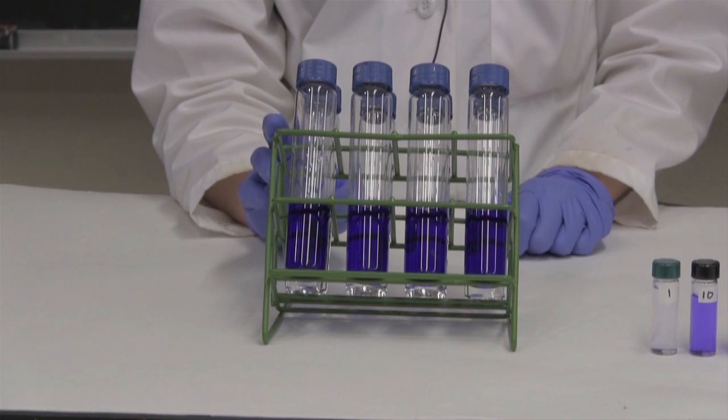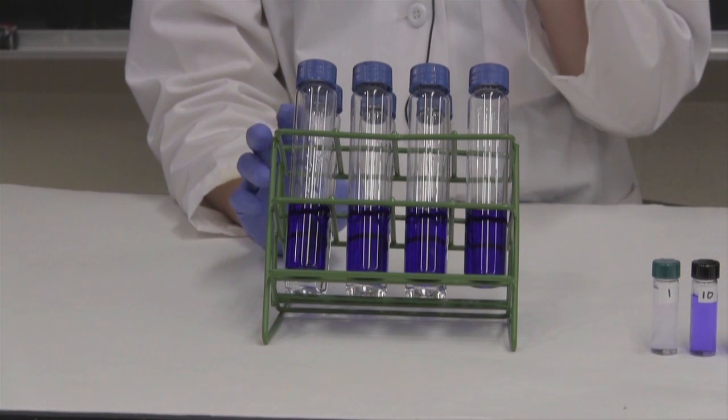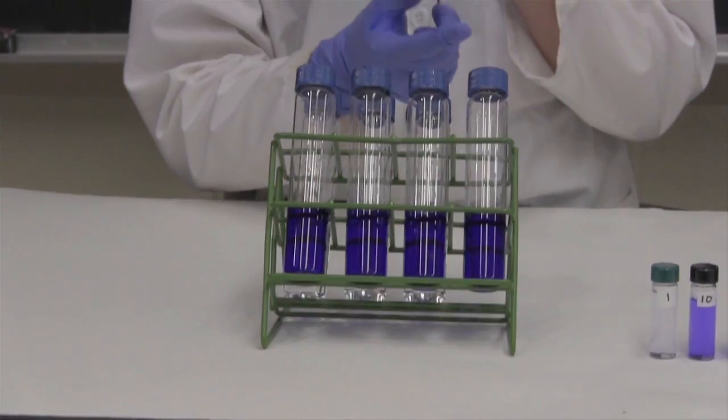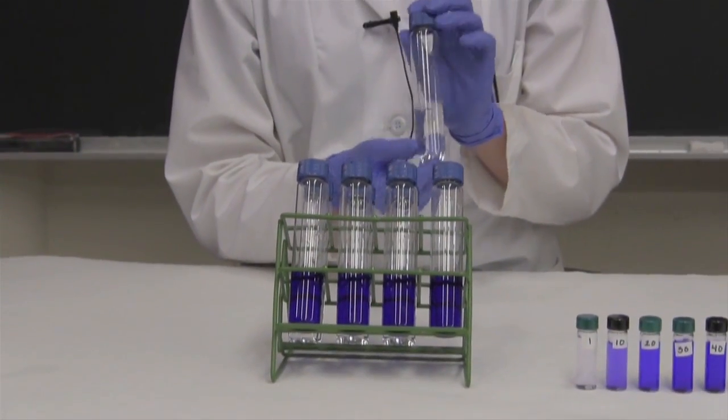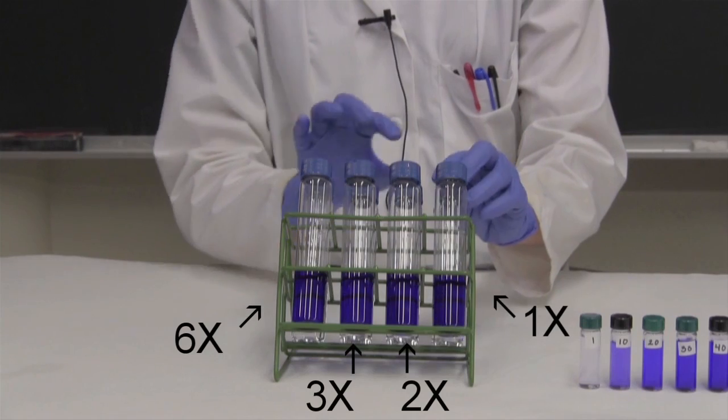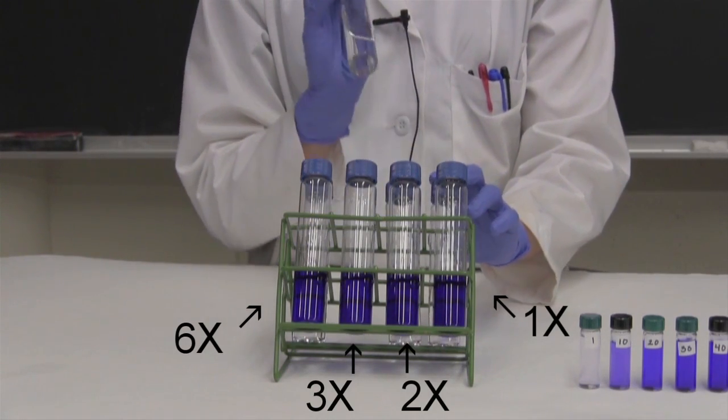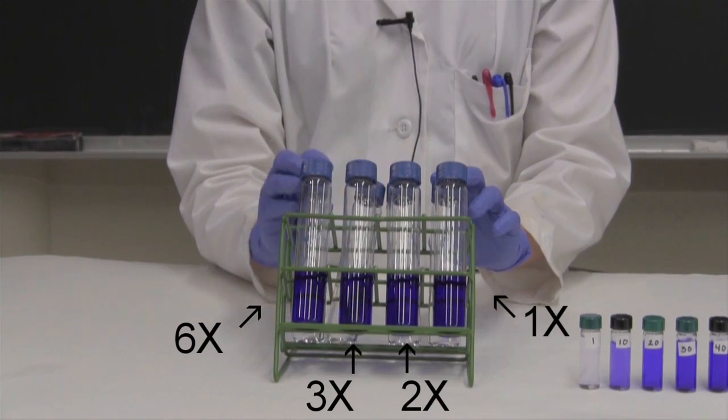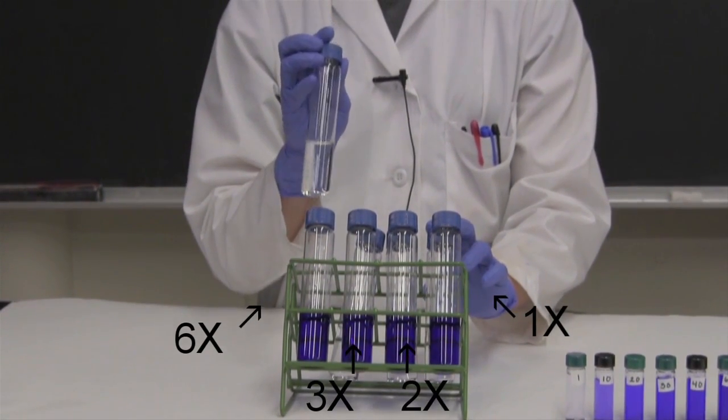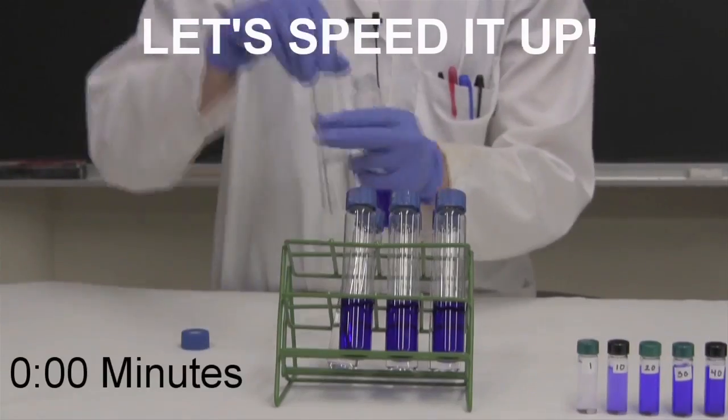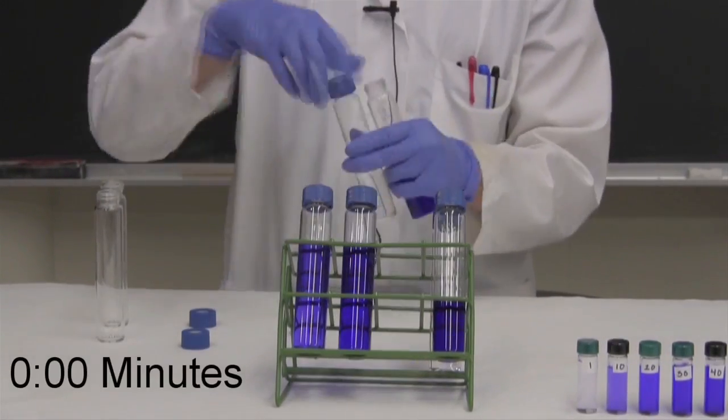Here we have four solutions. They all have the same amount of crystal violet in them, but we're going to vary the amount of hydroxide we put in them. So let's say the solution on the right has x amount of hydroxide. The next solution will have 2x, the next will have 3x, and the last solution on the left will have 6x. So now let's see how long it takes for the crystal violet to decolorize.